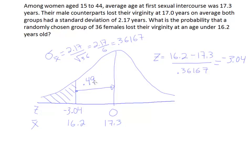So 0.4988 is the value here. And then we simply do 0.5 minus 0.4988, which of course gives you 0.0012.